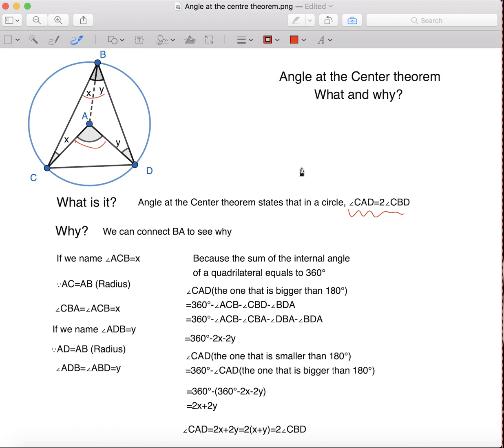So, why is this? If we name angle ACB equals to x, and we also know that AC equals to AB because both of them are the radius, we can know that angle ACB equals to angle CBA, and both of them equals to x.